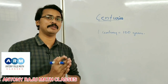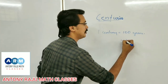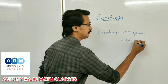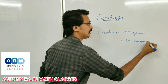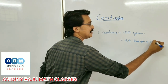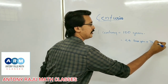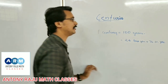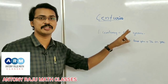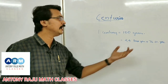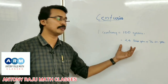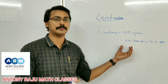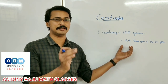Actually, 24 leap years are there. That is, 24 leap years plus 76 ordinary years — that is 1 century. 100 years is equal to 24 leap years and 76 ordinary years.